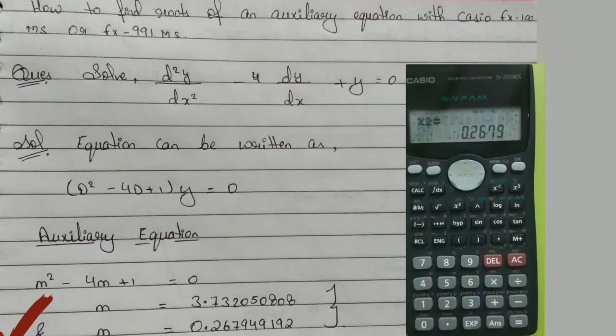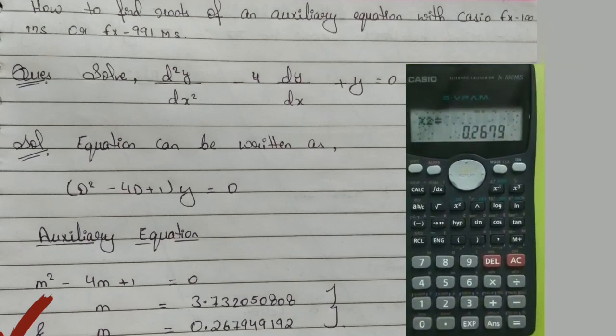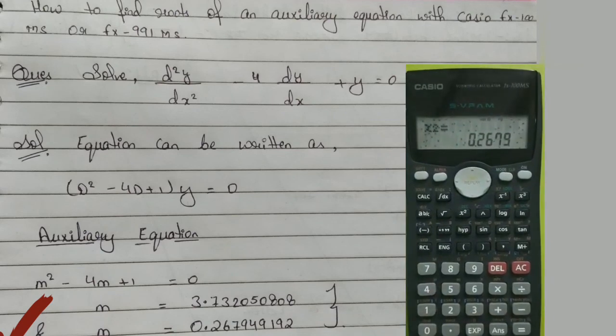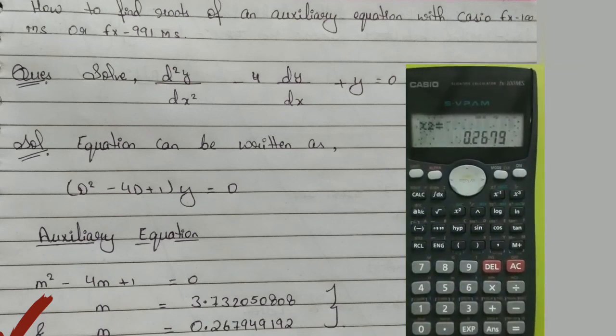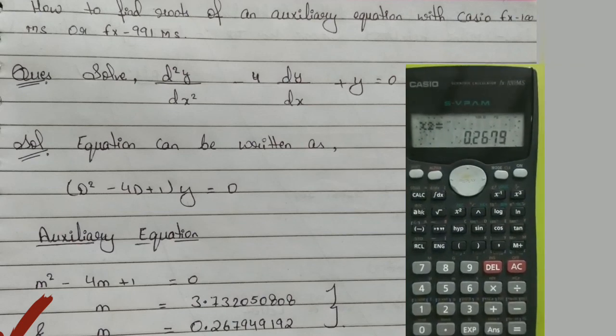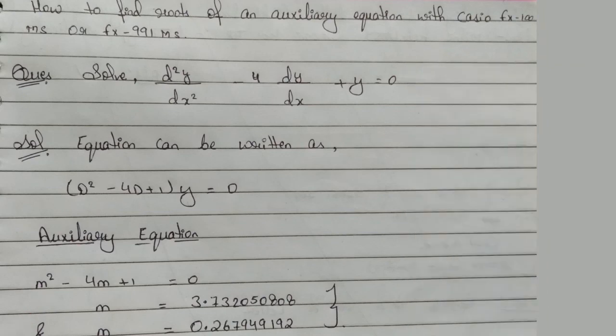So m = 0.267949192. These are irrational roots. Why? Because they are non-terminating and non-repeating. That's why these are irrational roots.